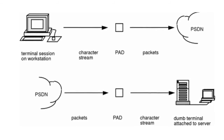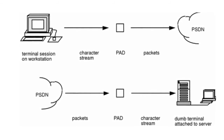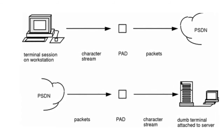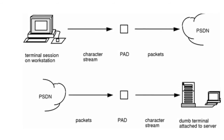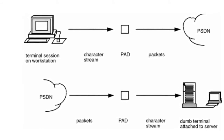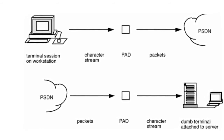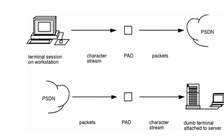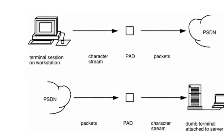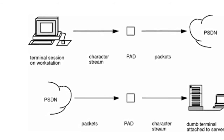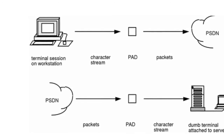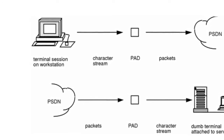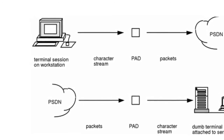To configure the PAD, the administrator must specify a number of PAD parameters, such as echo control, data forwarding, brake signals, line folding, and binary speed. The PAD parameters — usually 22 for each terminal that the PAD services — are defined by an International Telecommunication Union protocol called X.3.